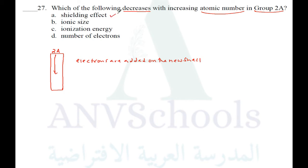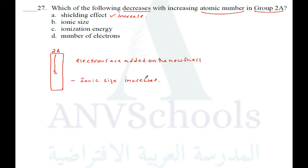Shielding effect increases, not decreases. As you go down a group, the size of an atom increases. So ionic size — whether neutral or ionic — it does not decrease; it increases.